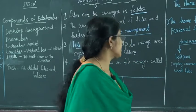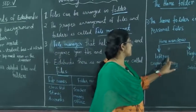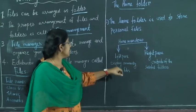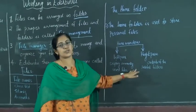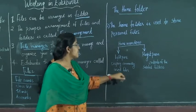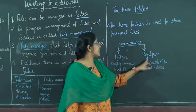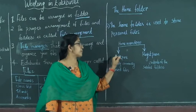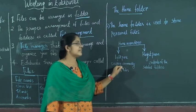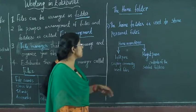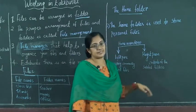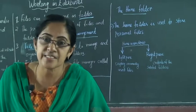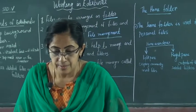The home window is divided into two panes: the left pane and the right pane. The left pane displays commonly used locations, while the right pane displays the content of the selected folder. Home folders are used to store personal files.